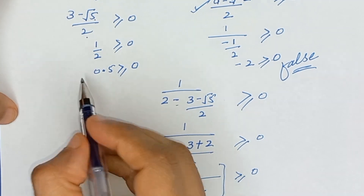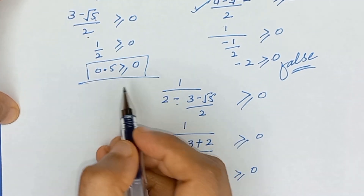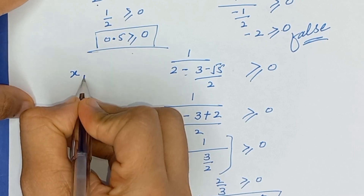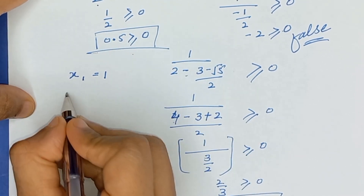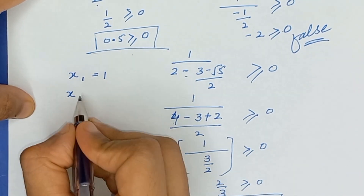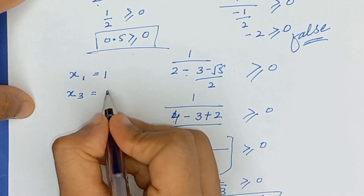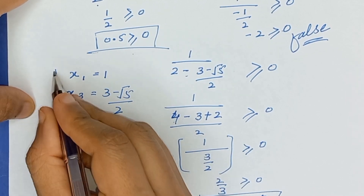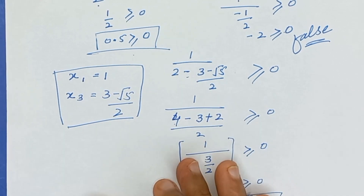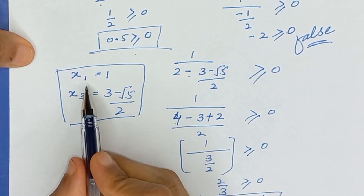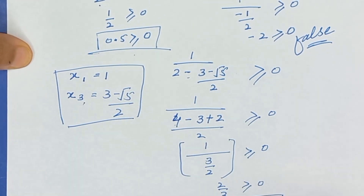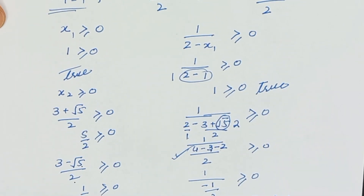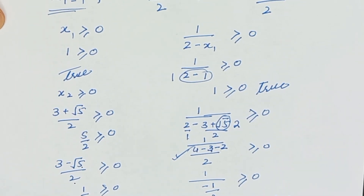So x3 holds for both conditions. The two valid solutions for this equation are x equals 1 and x equals (3 minus square root of 5) divided by 2. Thanks for watching — I hope you like this video. If you like this video, don't forget to subscribe to my channel. Bye!